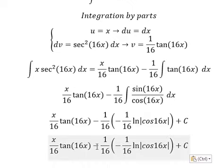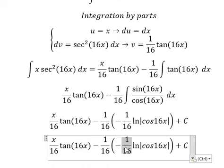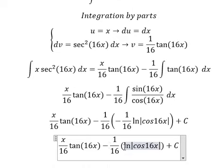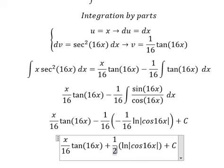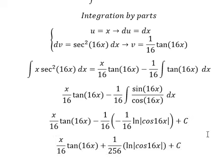Negative 1 over 16 multiplied by this one, you will have positive 1 over 256. This is the final answer we need.